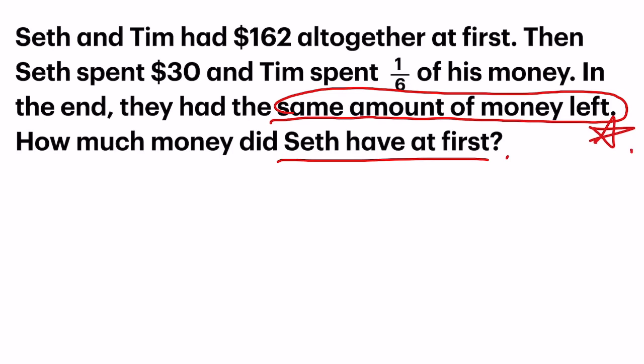The key phrase here is that they have the same amount of money left. Usually we combine a before and after model and look at the difference between the two models to find a relationship and find one unit. But this time, I'm going to teach you how to use one model to do it. So I'm going to start with the after model, which is that they had the same amount of money left.